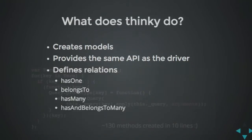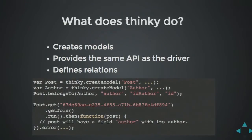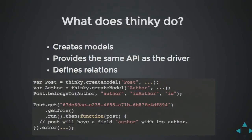Because Thinky is based on joins, you can define relations that actually work: hasOne, belongsTo, hasMany, and hasManyThrough — the four relations you have in Active Record, for example. You create two models like Post and Author, set that a post belongs to an author, and use a special command called getJoin that retrieves the joined documents. You only need to define the foreign keys once — the left key being authorId and the right key being id — and then Thinky handles the rest.